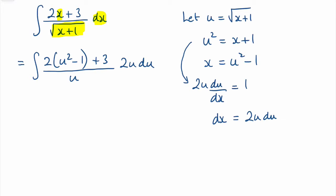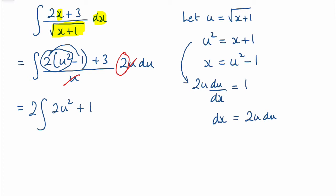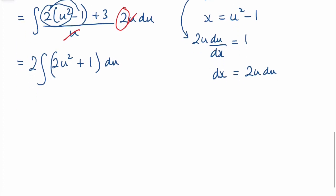I can do a little bit of cancelling — I can cancel the u in the denominator with the u from 2u du, and bring the 2 outside the integral. Then expanding the brackets, I've got 2 times the integral of 2u squared minus 2 plus 3, which simplifies to 2u squared plus 1, with respect to u.